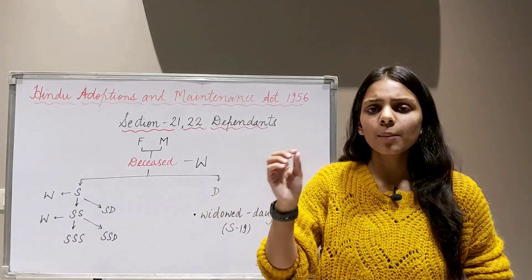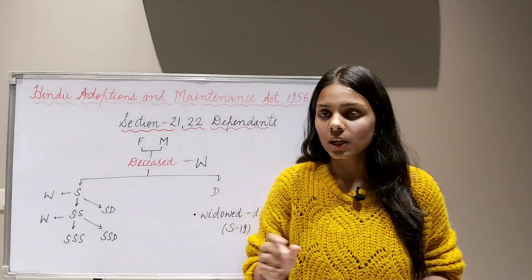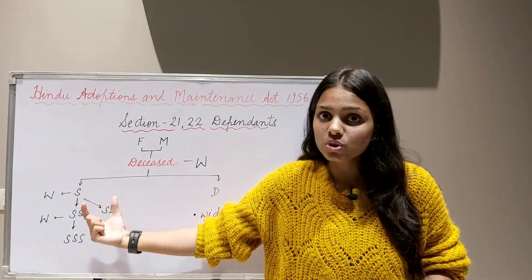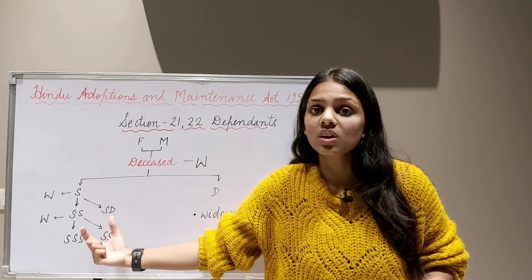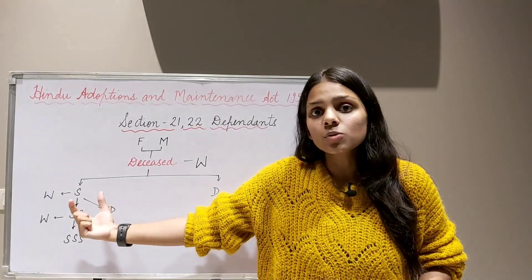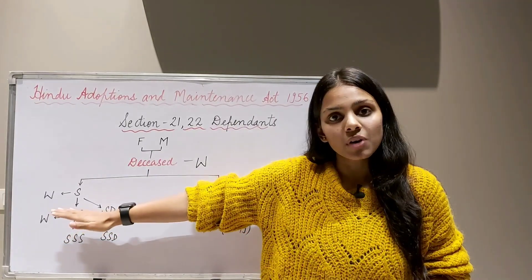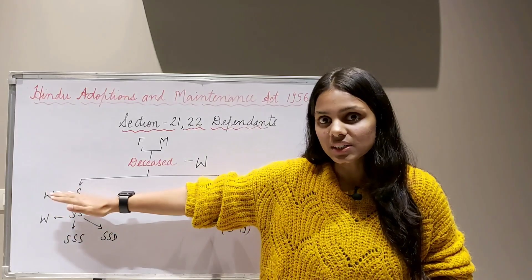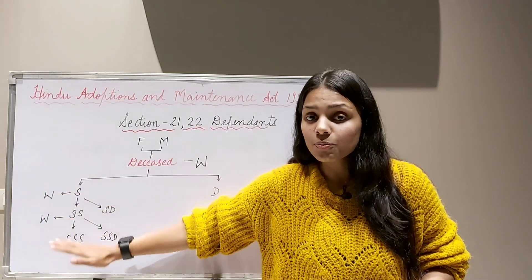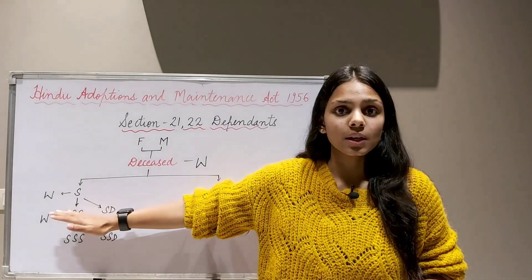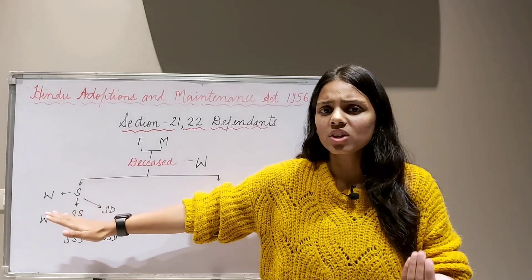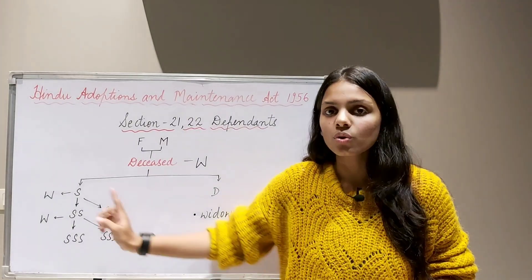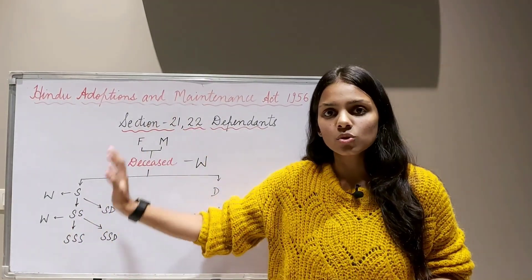An important legal terminology to discuss here is 'pre-deceased.' A pre-deceased son means a son who died before the deceased Hindu himself. If a son's father died before the son, then the son becomes pre-deceased relative to the Hindu. So we have: son of a pre-deceased son, and son of a pre-deceased son of a pre-deceased son. Along with these come their daughters and their widows.